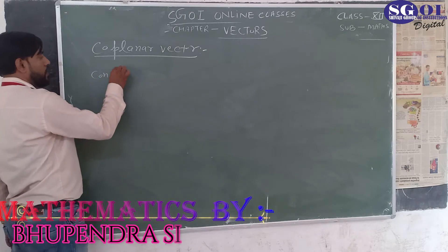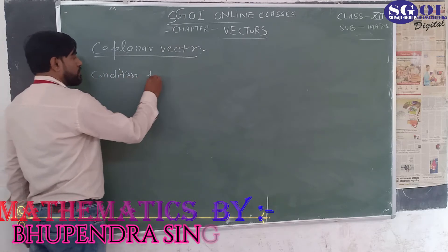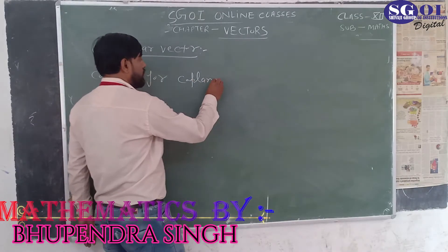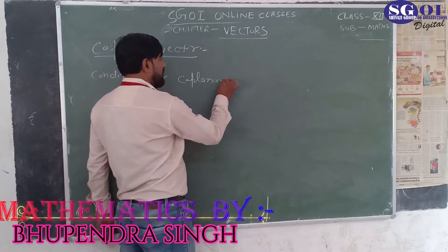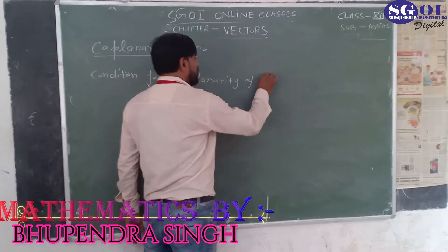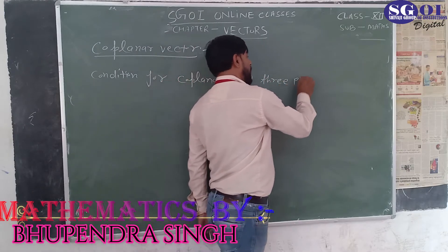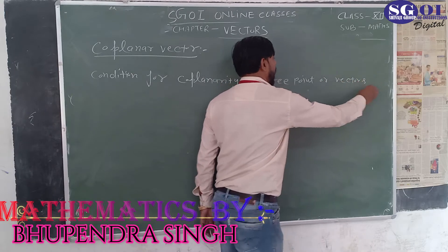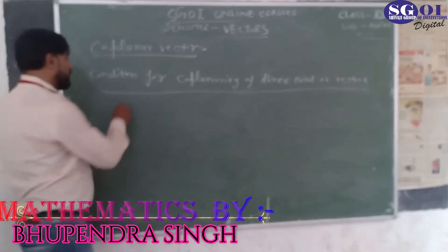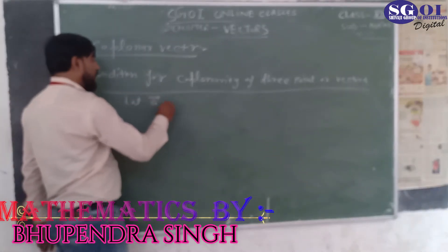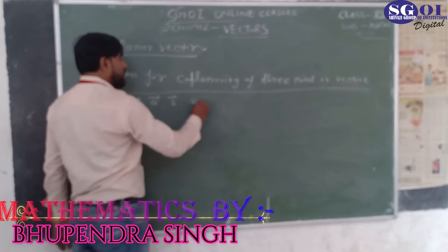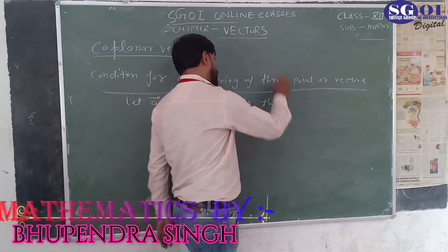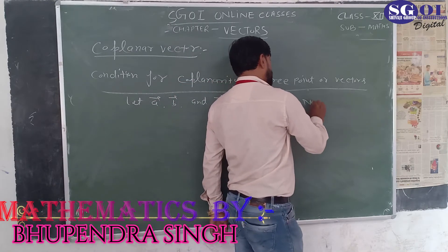Now, the condition for co-planar vectors. We consider a number of three points or vectors. Let vector A, vector B, and vector C be three non-co-planar vectors.